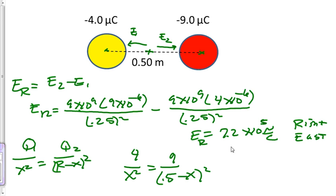Okay, now we're going to get 9x squared equals 4 times 0.5 minus x squared. And that's just simple proportions cross-multiply. And we'll set zero equals 9x squared minus 4 times 0.5 minus x quantity squared.